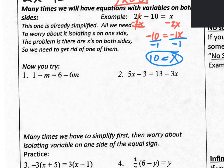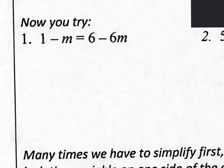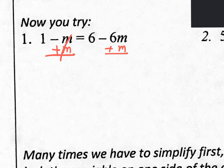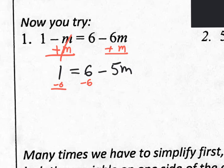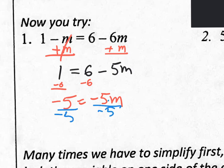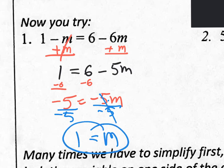Let me do number 1, then you try number 2. We have M's on both sides. Get rid of the minus M by adding M to both sides. The new equation is 1 equals 6 minus 5M. Get rid of the 6 by subtracting 6 from both sides: negative 5 equals negative 5M. Divide by negative 5 on both sides: M equals 1.